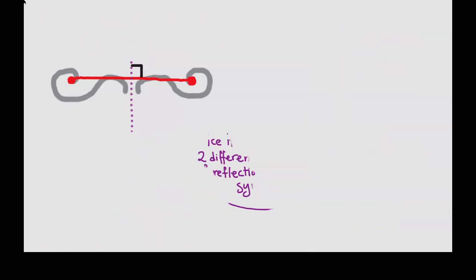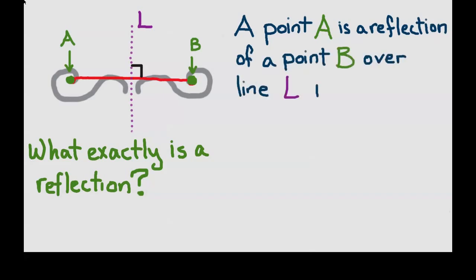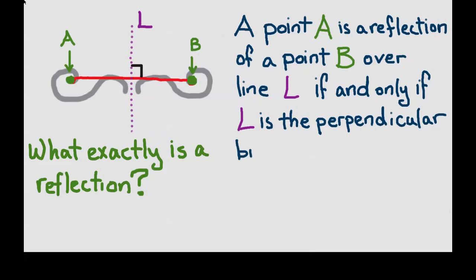I'm erasing everything but my mustache. I'm going to ask you what exactly is a reflection. A point A is a reflection of a point B over a line L if and only if L is the perpendicular bisector of the line segment AB.